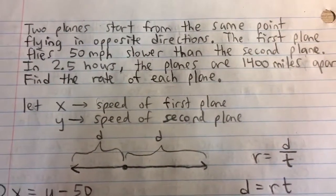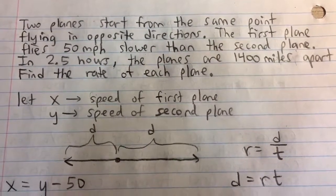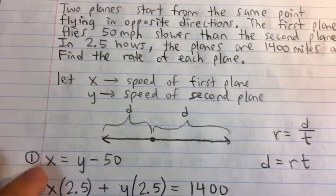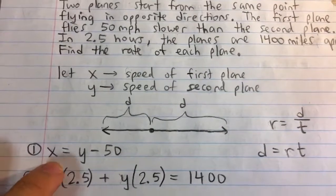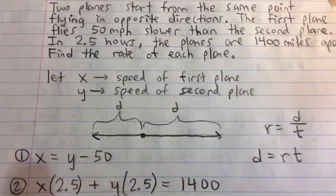We can relate these speeds into an equation because it says that the first plane flies 50 miles per hour slower. So the speed of the first plane is equal to the speed of the second plane minus 50.